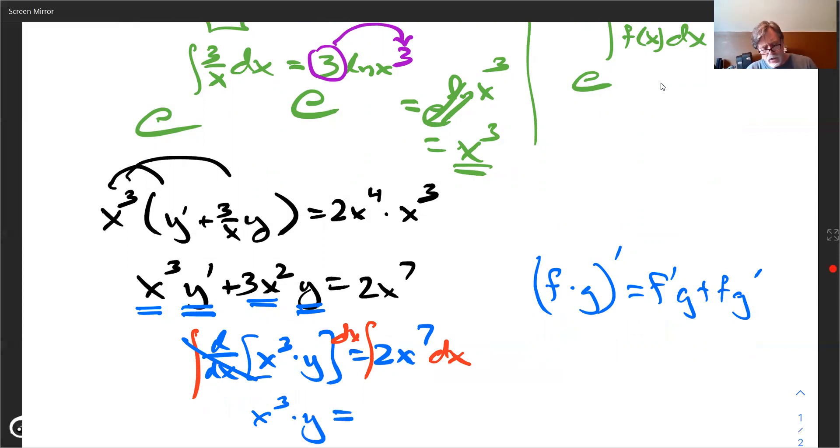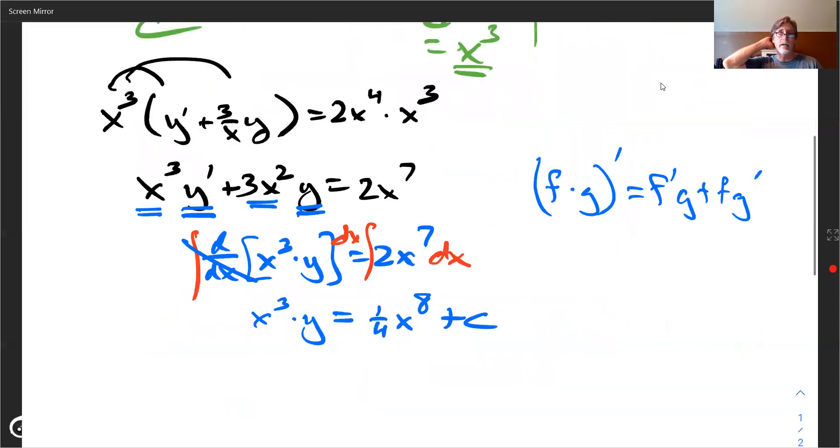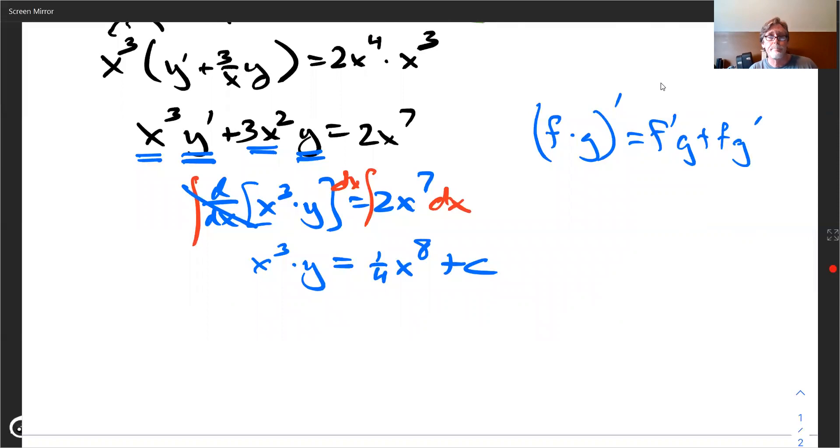they cancel. So the beauty is we have x cubed times y and now we integrate the other side. It looks like we're getting 2 x to the eighth over eight. So how about one fourth x to the eighth? Now we need the plus c. That's important there.